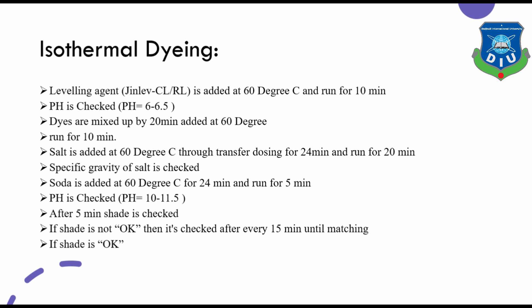For the isothermal dyeing complete process: first, add the leveling agent Gene Lab CL by R at 60 degrees centigrade and run for 10 minutes. Check the pH — if 6 to 6.5, add the dye over 20 minutes at 60 degrees centigrade, run for 10 minutes. Then add salt at 60 degrees centigrade through transfer dosing for 24 minutes and run for 20 minutes. Check the specific gravity of the salt.